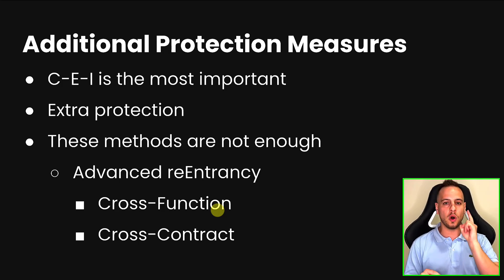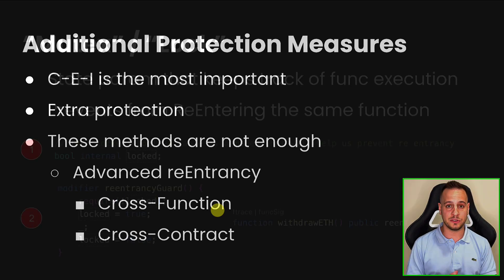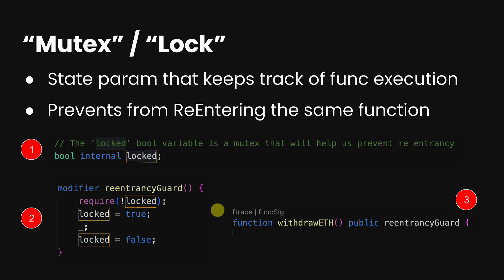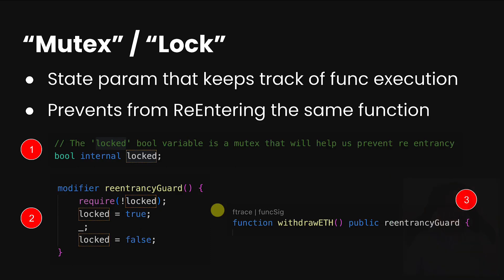The first additional method is a mutex, or lock. A mutex is a state parameter defined within the contract that keeps track of function execution — think of it like an on/off button. It basically prevents a user from entering the same function again. You can see in the example that we first define a boolean variable called `locked`.